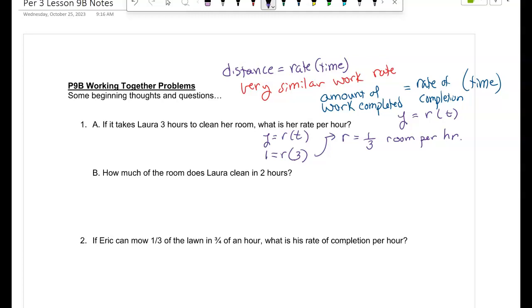All right. Next one. How much of the room does she clean in two hours? So what's my formula? The job of completion equals rate times time. So what do we know her rate is? One-third. How much time did she work? Two. So how much of the job is she going to get done? She's going to clean two-thirds of her room. Are you seeing it's really using the same concept as you did yesterday? So she did two-thirds of her job.